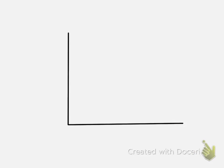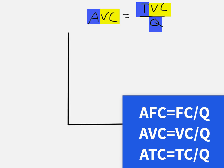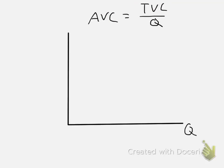Next up, we have average variable costs. With all these average-something costs, we take the total-something cost and divide it by output. So average variable cost equals total variable cost divided by quantity. I'll keep the same labels for my axes, and average variable cost just looks like a U, labeled AVC. It goes down and then starts to come back up.